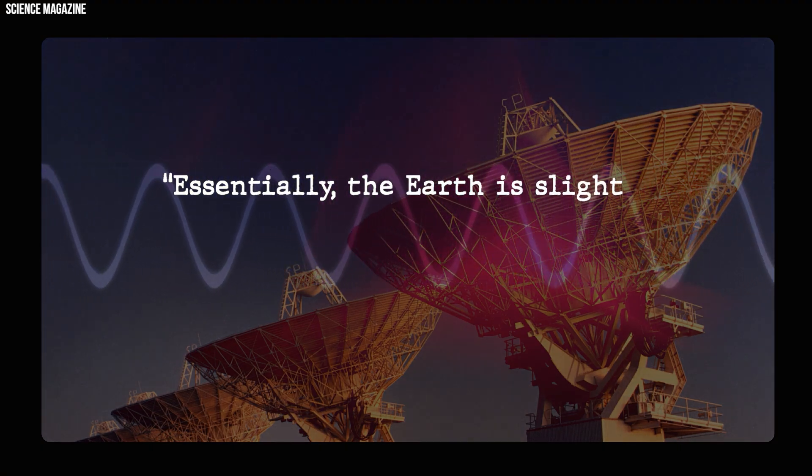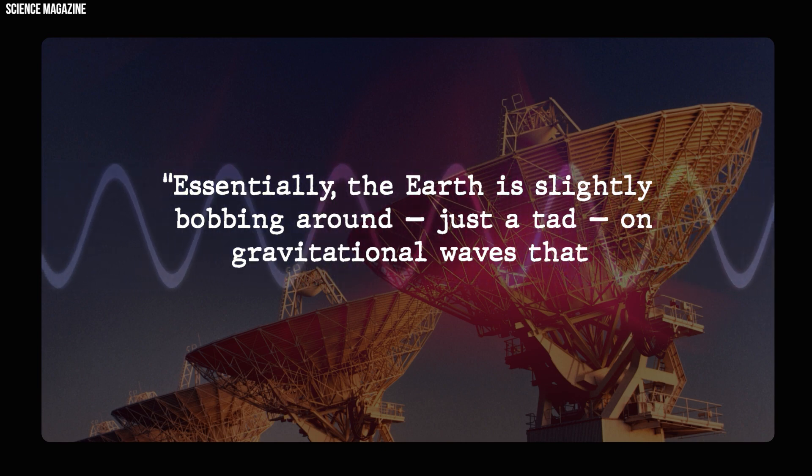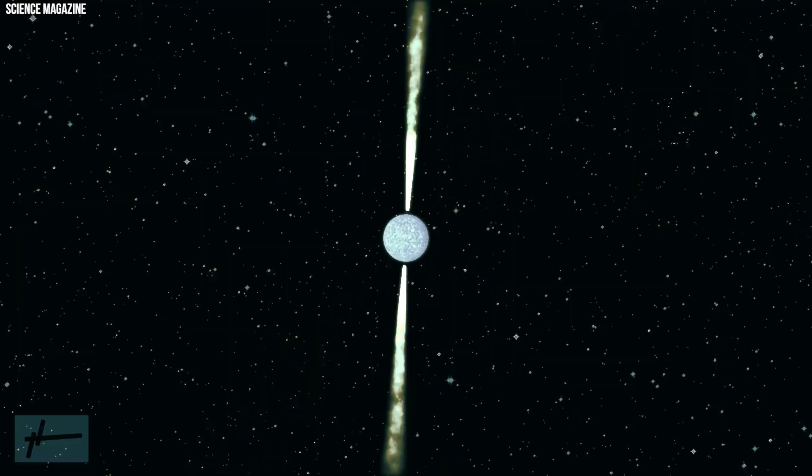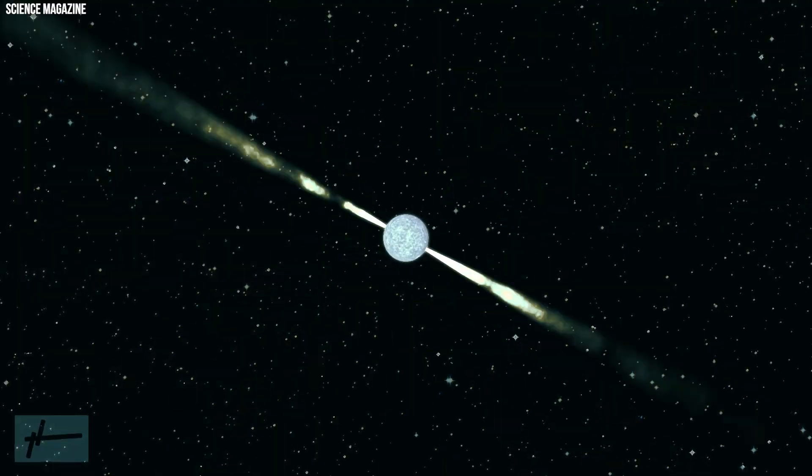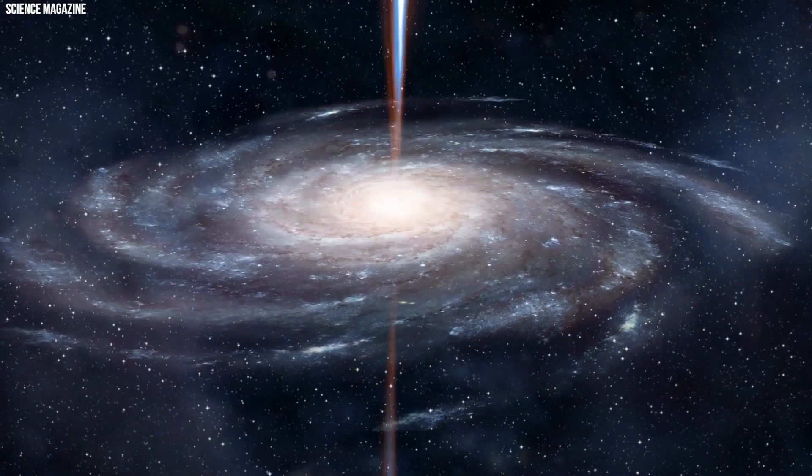Essentially, the Earth is slightly bobbing around, just a tad, on gravitational waves that span light years, explained Ransom. And we've observed this using an array of almost 70 millisecond pulsars scattered around our part of the Milky Way.